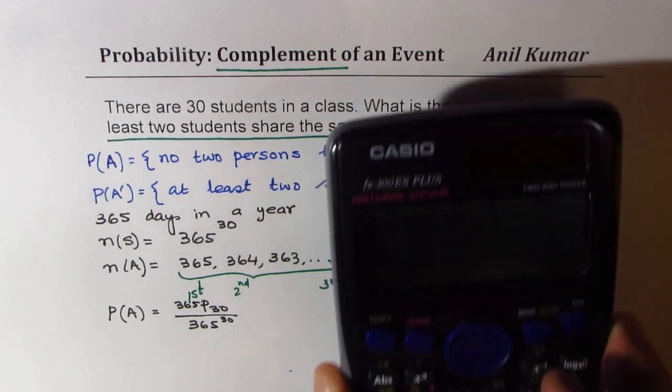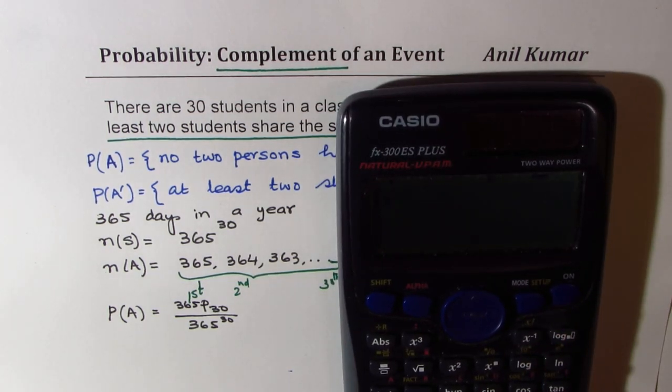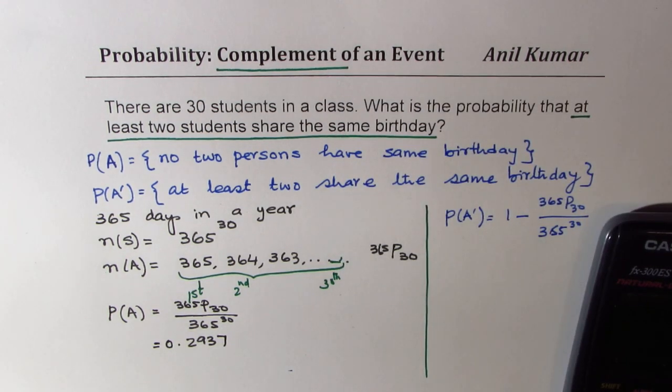So what we get here is 365 P 30 divided by 365 to the power of 30, which is equal to, so in the first case, this is equal to 0.2937. I'm rounding it.